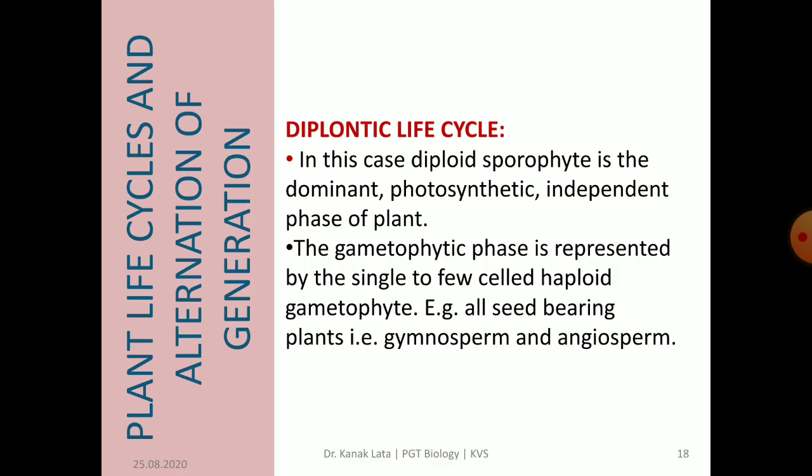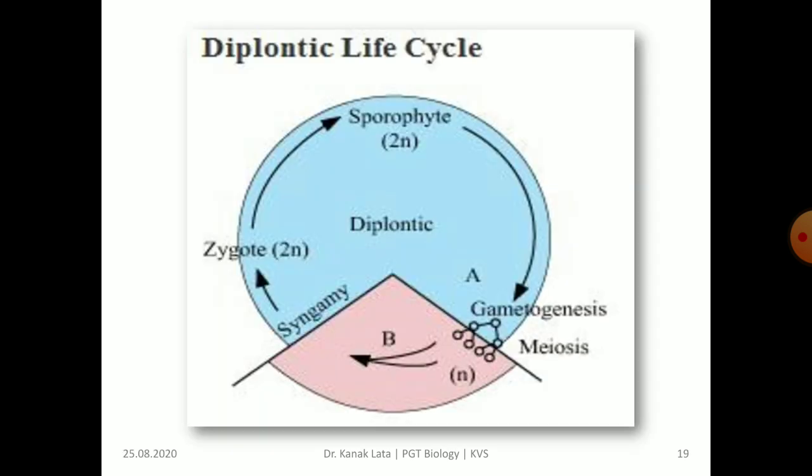The second type is the diplontic life cycle. In this case, the diploid sporophyte is the dominant, photosynthetic and independent phase of the plant. Meiosis occurs at the time of sexual reproduction during the formation of gametes. The gametes are haploid, which fuse to form a diploid zygote, and this diploid zygote germinates to produce the diploid plant body. It is seen in all seed-bearing plants, that is in gymnosperms and angiosperms. Here is the flow chart of the diplontic life cycle showing the dominant diploid sporophytic phase.